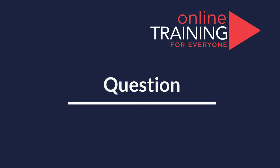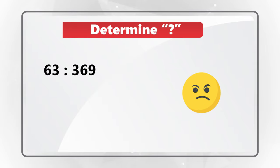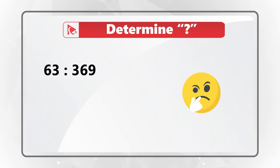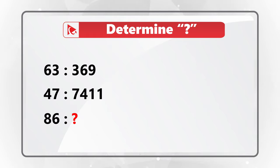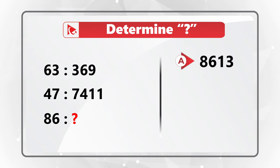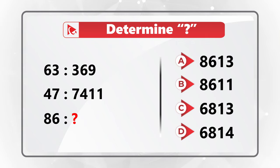Here is one of the very interesting questions to test your analytical skills. You're presented with three ratios: 63 to 369, 47 to 7411, and then a third ratio where 86 is related to a question mark. You need to determine the question mark from four choices: Choice A: 8613, Choice B: 8611, Choice C: 6813, and Choice D: 6814.